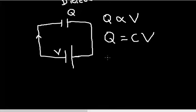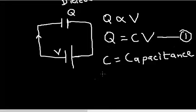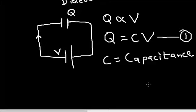When we replace the proportionality sign with an equals sign, we introduce a constant of proportionality. This constant is used to rate a capacitor and is called the capacitance, C. So the charge stored by a capacitor is given by Q = CV, where C is the capacitance. The SI unit of capacitance is the farad, abbreviated F.